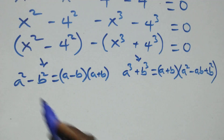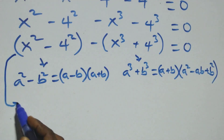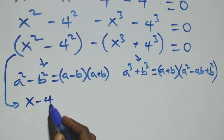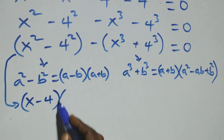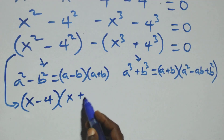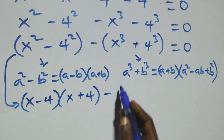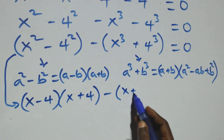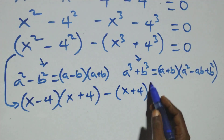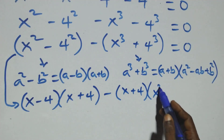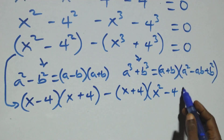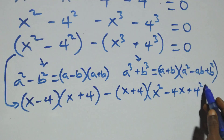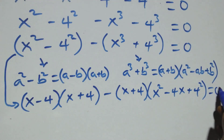Then we can rewrite everything we have here. This becomes bracket x minus 4 times bracket x plus 4, minus bracket x plus 4 times bracket x squared minus 4x plus 4 squared, equals zero.